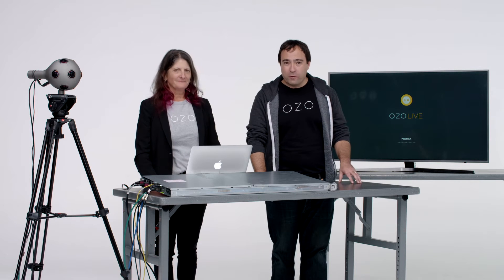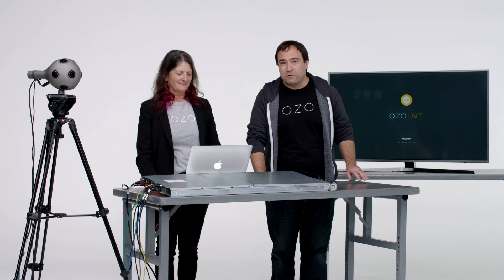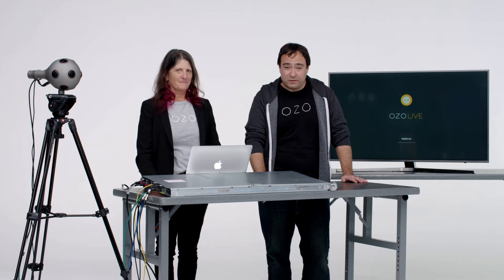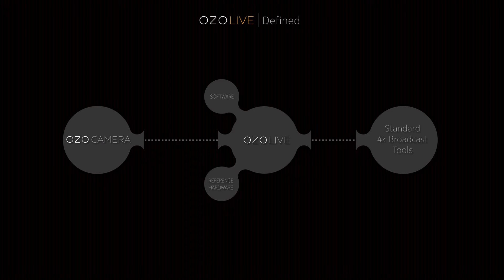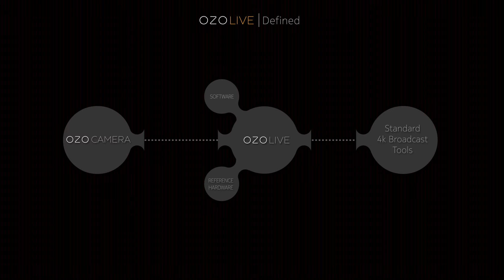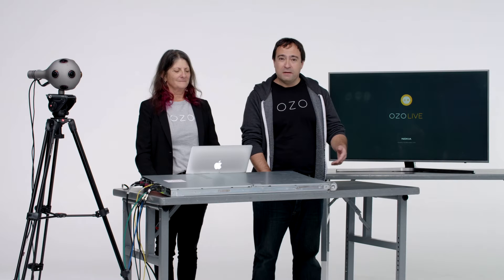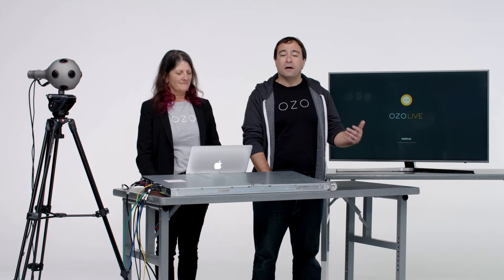This video will specifically go into the prerequisites you need — the skills and the hardware — that you'll need to run an Ozo Live production. Ozo Live is a software product that runs on reference hardware that takes the compressed signal out of the Ozo camera, containing all the camera feeds and microphone feeds, and turns it into a UHD 4K video output with embedded surround sound or stereo audio. That feed would then go into a broadcast production, from there to encoding and up to the internet.